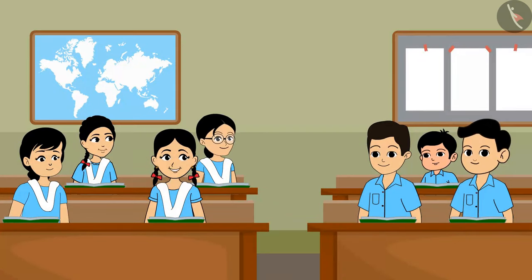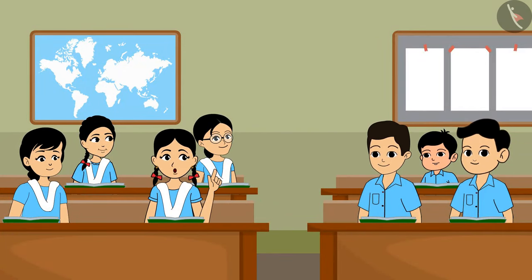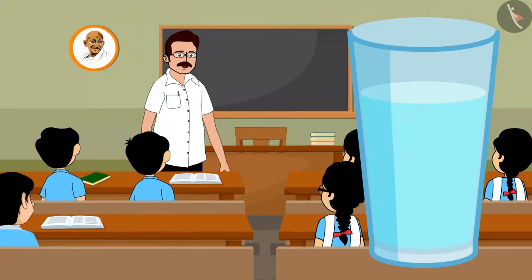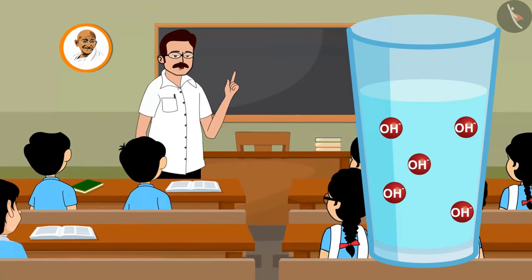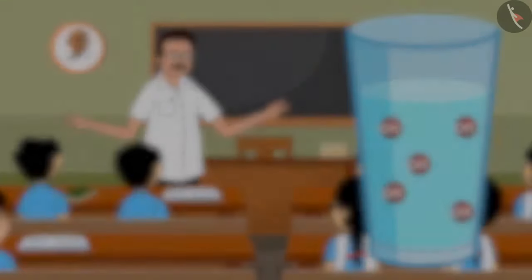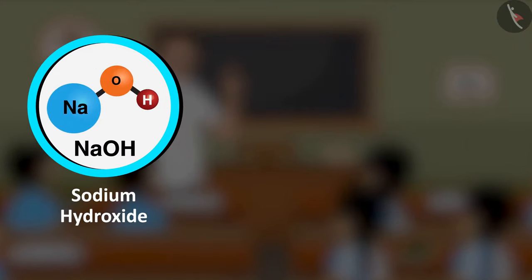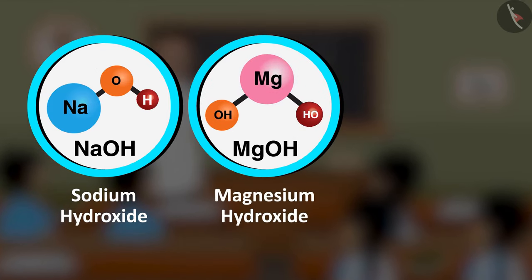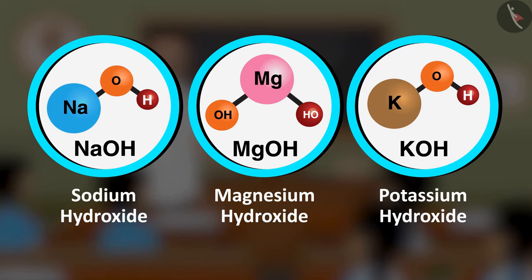Sir, do bases have more hydroxide ions in them? A base is any compound that yields hydroxide ions (OH⁻) when dissolved in water. Examples include sodium hydroxide (NaOH), magnesium hydroxide (Mg(OH)₂), and potassium hydroxide (KOH).